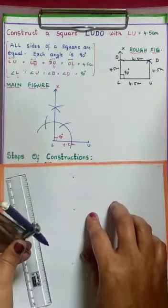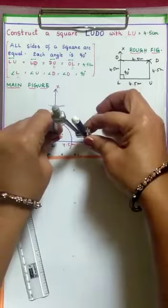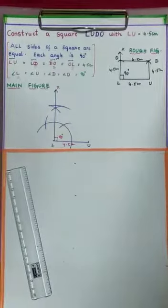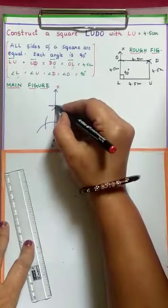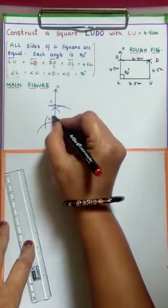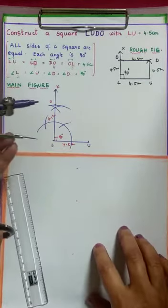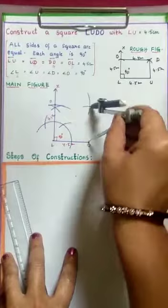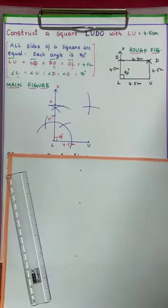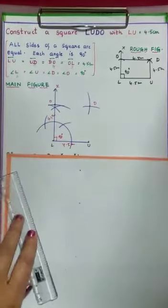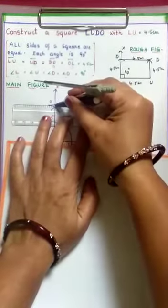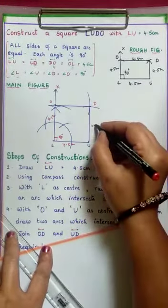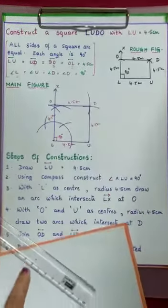Since all 4 sides of the square are equal, taking 4.5 cm radius, cut this LX ray, which intersects at O — which is 4.5 cm. You need not disturb the radius. Taking O as center, draw an arc. With the same radius, with U as center, cut this arc. Where these two arcs intersect, name it as D. Join OD — this is 4.5 cm — and here also 4.5 cm. This is your required square.